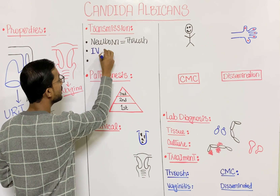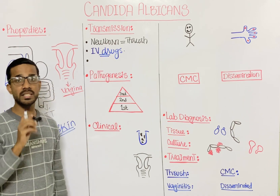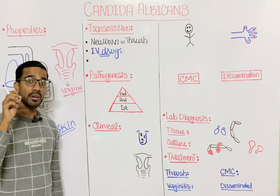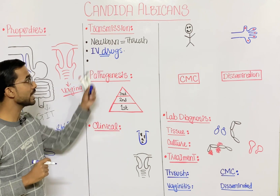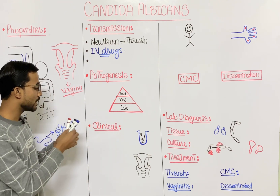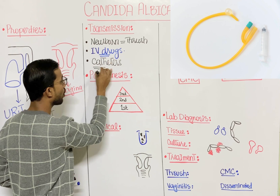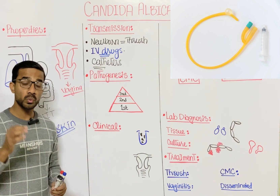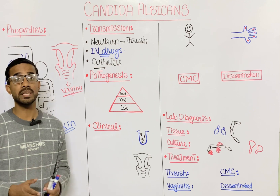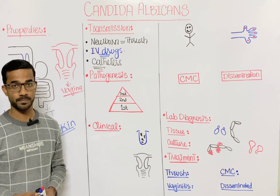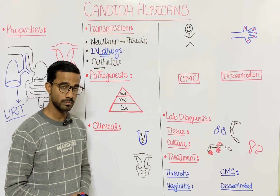Transmission can also occur in IV drug users, because when the skin is punctured, Candida albicans gets a chance to enter the body through IV drug injections. Additionally, catheter users are at risk — through catheters, Candida albicans can enter the body and colonize.